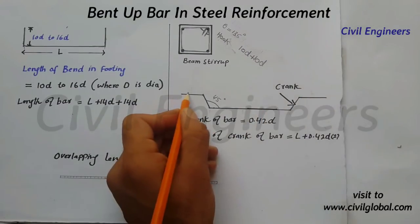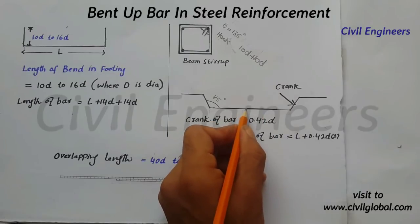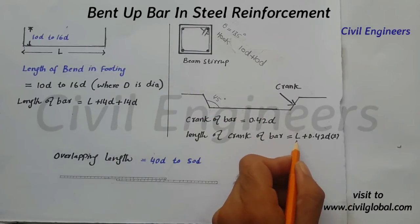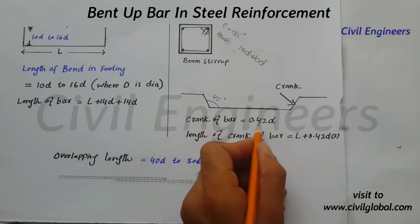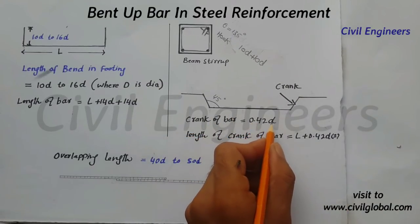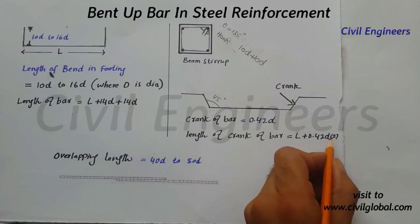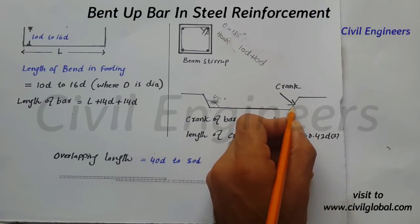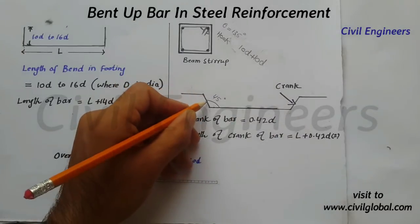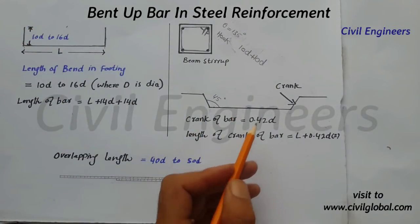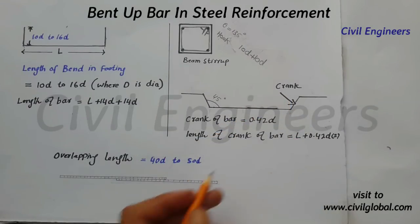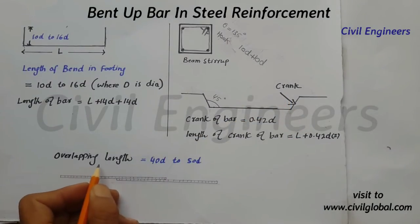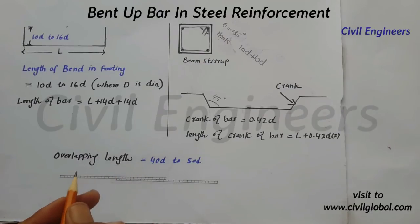The total length — first length plus second length plus third length — is equal to capital L plus 0.42D multiplied by two, because we have two bends: one crank on this side and one on the other side. This is the formula to find out the length of the bend and crank.